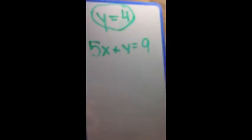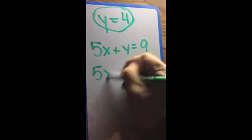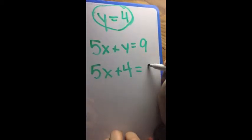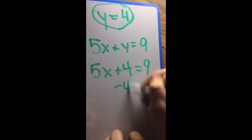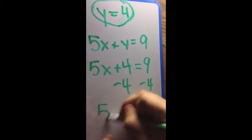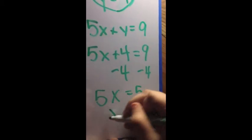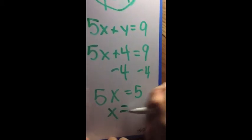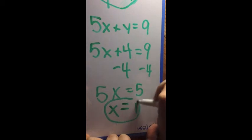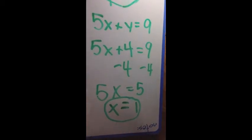Now know that y equals 4, and we can plug that into an original equation. One of the original equations was 5x plus y equals 9. We know that 4 is y. So 5x plus 4 equals 9. We subtract 4 from both sides. We then get 5x equals 5. So we divide each side by 5 and we get x equals 1. We now know x and y for our equation and we're done.